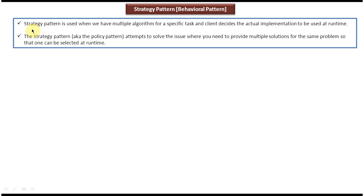The first explanation: the strategy pattern is used when we have multiple algorithms for a specific task and the client decides the actual implementation to be used at runtime. The second explanation: the strategy pattern attempts to solve the issue where you need to provide multiple solutions for the same problem, so that one can be selected at runtime.